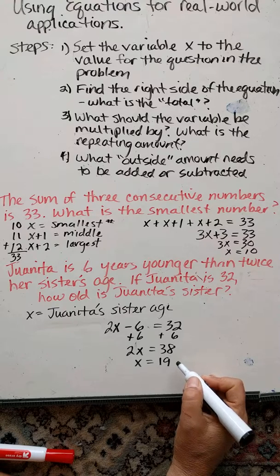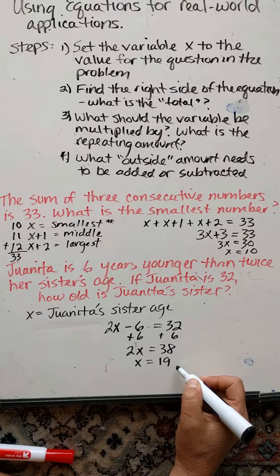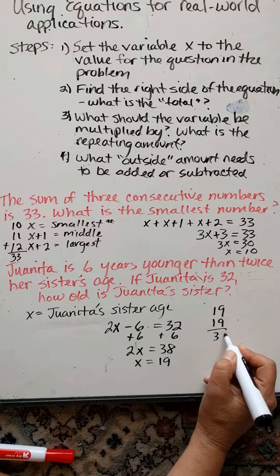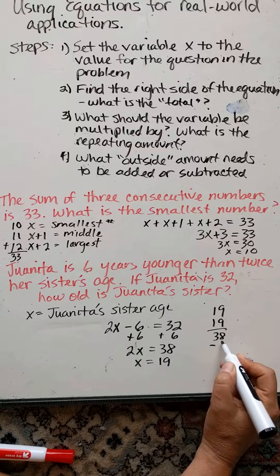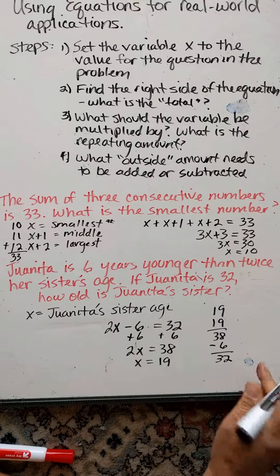So Juanita's sister is 19. And we can check our work here. Juanita is 6 years younger than twice her sister's age. So twice her sister's age is 38. And then if we subtract 6, we get 32. And that's how old Juanita is.